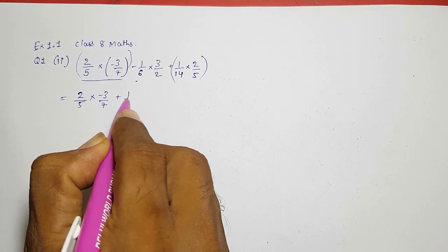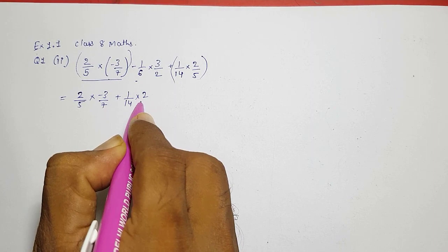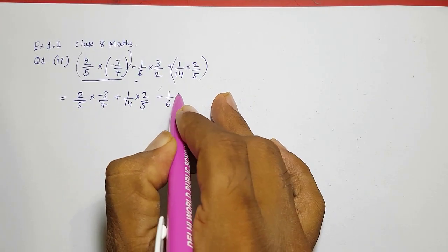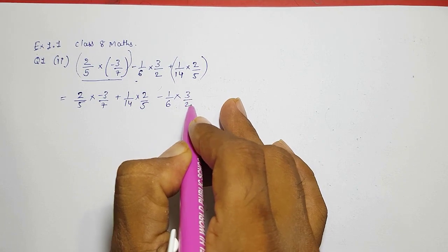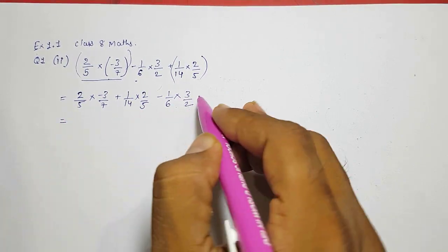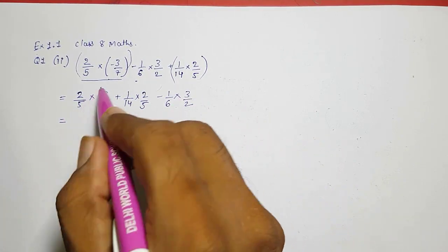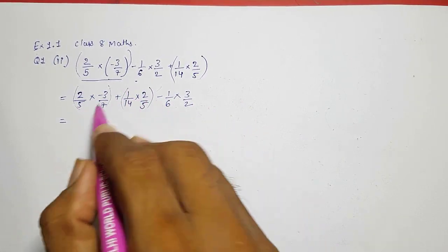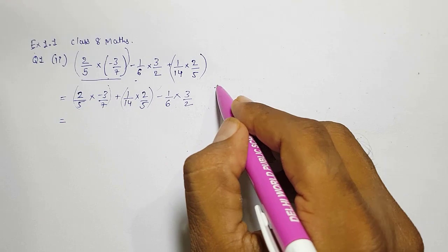Then this at the last minus 1 by 6 into 3 by 2. And here what we are going to do, you can see in this one 2 by 5 is there and this one also 2 by 5 is there, so we are going to first of all use commutative property.